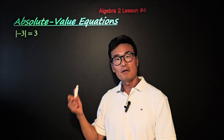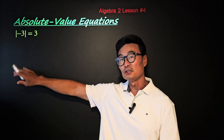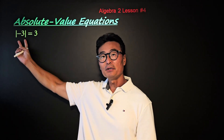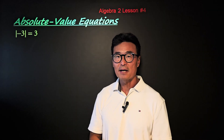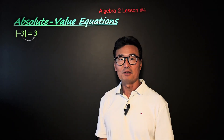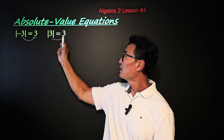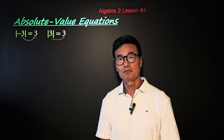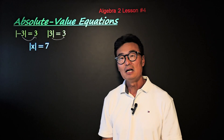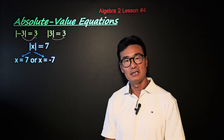Before we start solving absolute value equations, let's quickly go over the definition. When you take the absolute value of negative 3, or any negative number, it turns it into a positive number. And of course, if you have the absolute value of 3, it just stays as positive 3. For example, if we have absolute value of x equals 7, then x has to be 7 or negative 7.